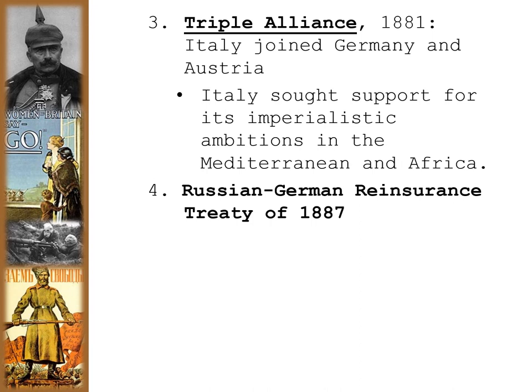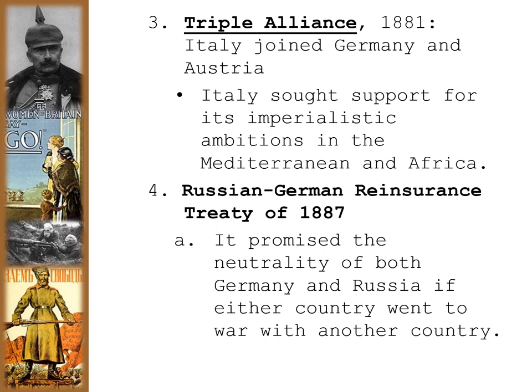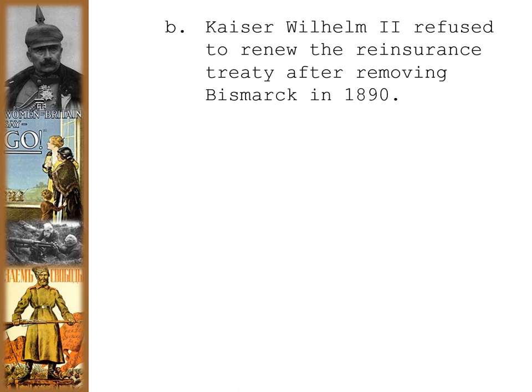The Russian-German Reinsurance Treaty of 1887 promised the neutrality of both Germany and Russia if either country went to war with another country. So Germany was making deals with Austria against Russia, but also a neutrality agreement with Russia at the same time. Bismarck was playing both sides — this is one reason why Kaiser Wilhelm II was unwise to force Bismarck into retirement. Wilhelm II refused to renew the Reinsurance Treaty after removing Bismarck in 1890, and that deal with Russia fell apart as a result.